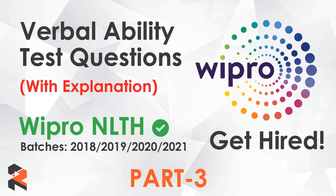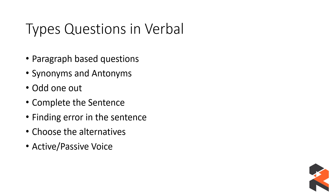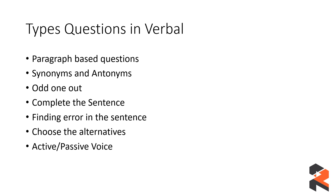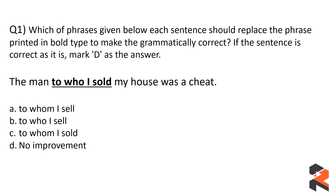All the links are mentioned in the description box below. Now, the types of questions we are dealing with — which we have also talked about in our previous videos — you can see on screen. These are the types of questions in the verbal ability section. The first question asks: which of the phrases given below each sentence should replace the phrase printed in bold type to make a grammatically correct sentence? If the sentence is correct as it is, mark D — no improvement.